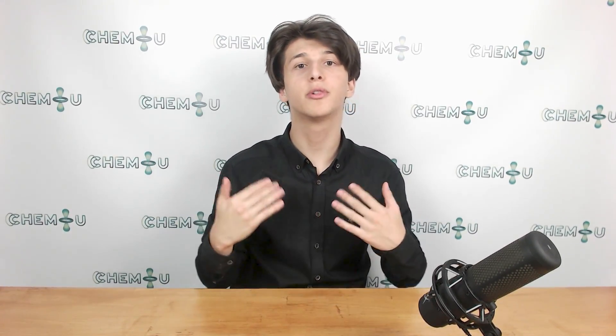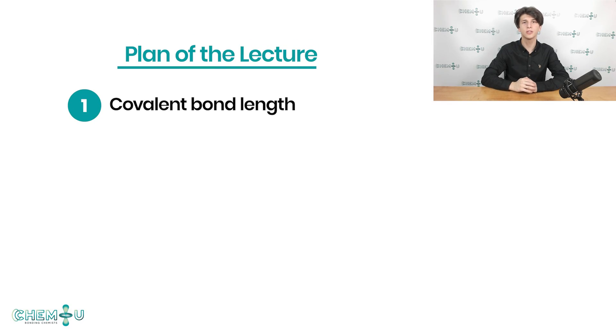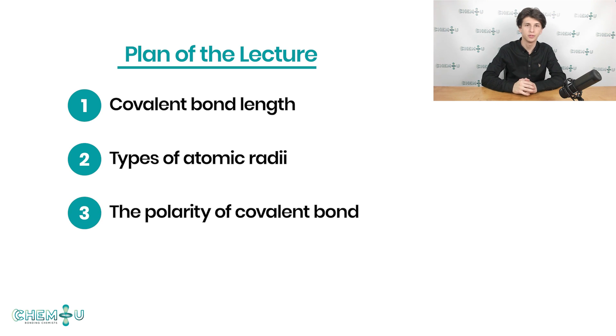Welcome back to the organic chemistry course for undergraduate students. Let me briefly introduce the plan of the current lecture. First, we will deal with the concept of covalent bond length. It will help us describe several ways of defining the atomic radius. The next topic for today's discussion will be the polarity of a covalent bond. Using this feature, we'll have enough information to talk about the dipole moment.